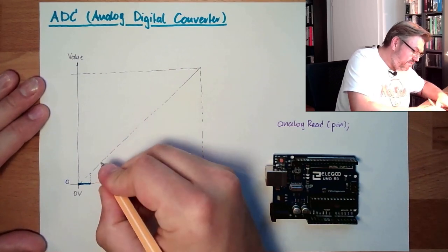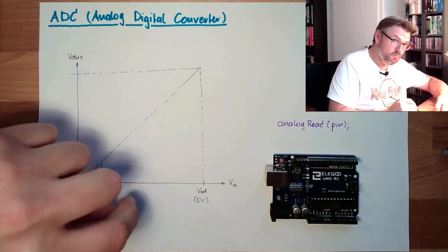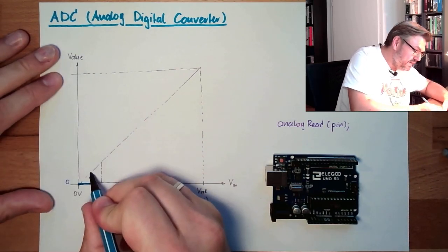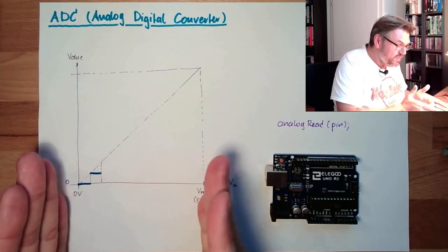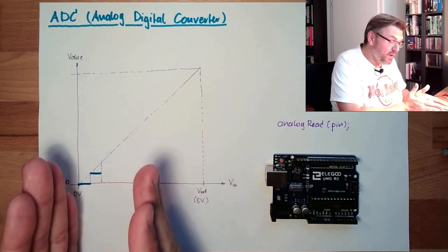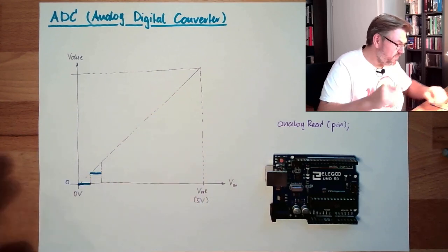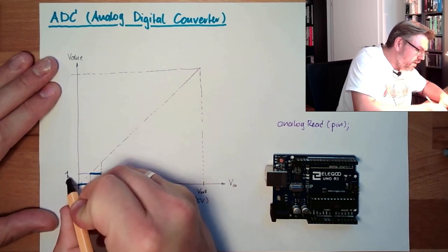If we have then in the next area, which is of the same broad, so it's the next class simply. So we are dividing this total range into classes, equally spaced classes. Then, you know, the next one would be then value number 1.